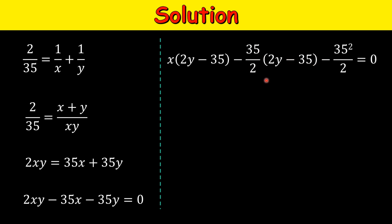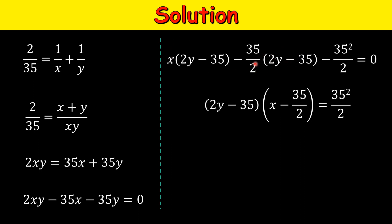The remaining value is plus 35 squared over 2, which is an extra term not initially on the left-hand side, so we subtract it to keep the expression unchanged. We have now factorized the left-hand side. We see that (2y minus 35) is common, so we take that term to the right-hand side. On the left we have (2y minus 35) times (x minus 35/2), and on the right the sign changes. Multiplying both sides by 2, we get (2x minus 35).